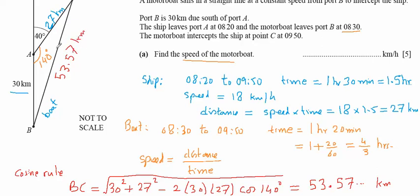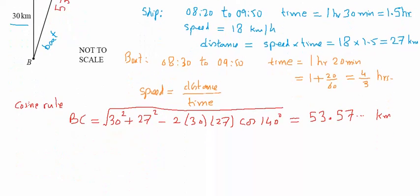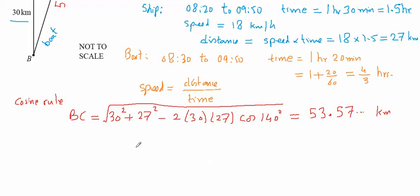And now we know the distance BC and we know the time taken, so the speed we can easily calculate for the boat. So the speed is equal to distance over time.